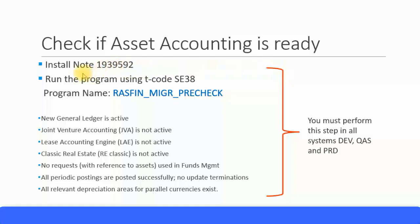If you have not installed this node, you must install SAP note 1939592 — get your basis administrator to install this note. Then you can run the program using transaction code SE38, and the program name is RASFIN_MIGR_precheck.